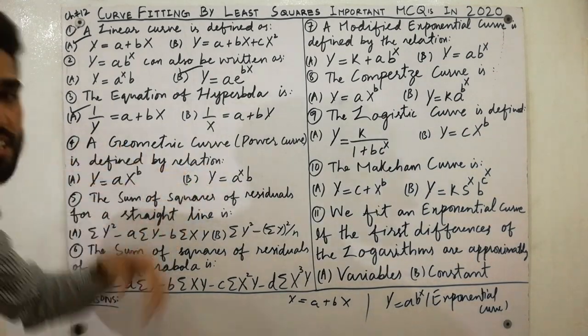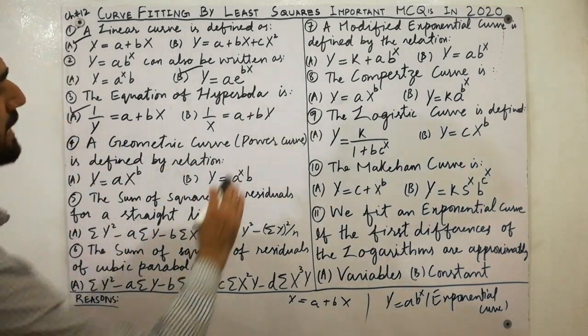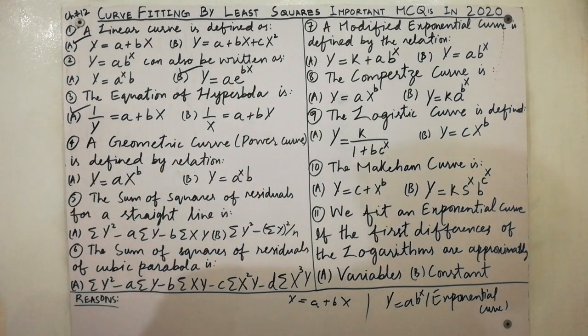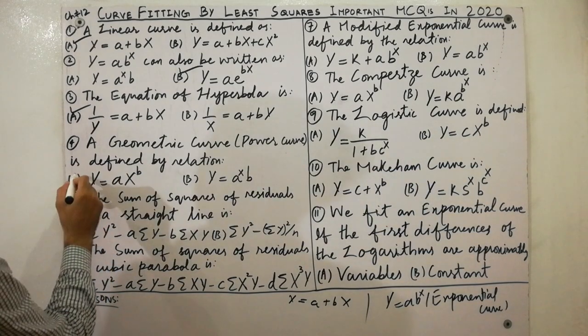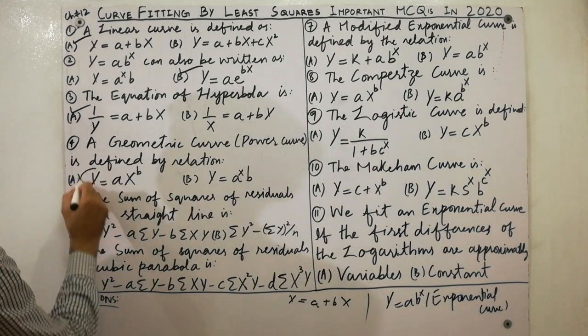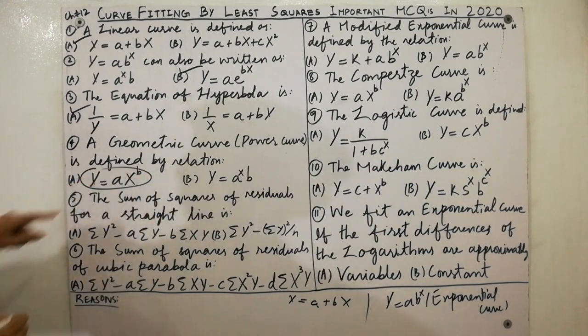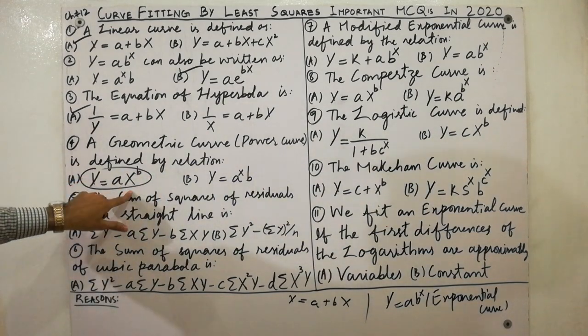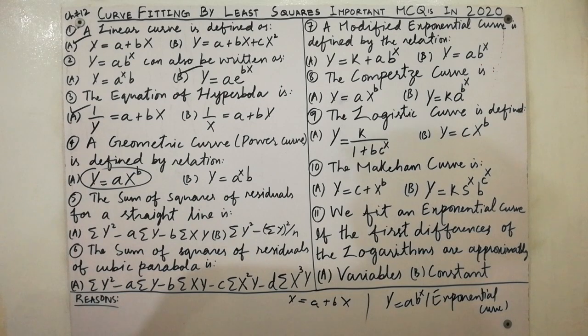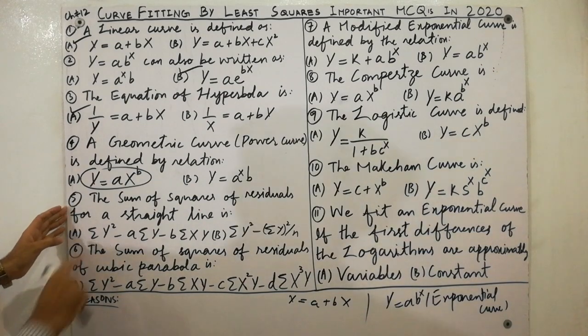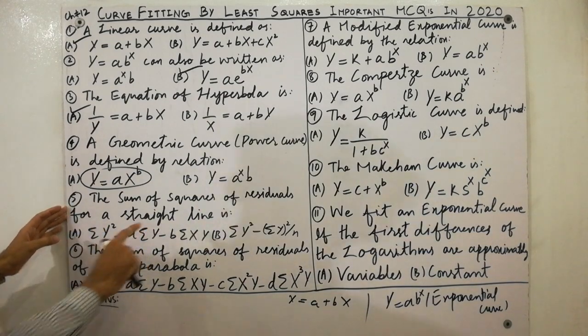Next, a geometric curve, also called a power curve, is defined by the relation y is equal to a·x raised to the power b.